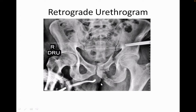The McAninch-Colapinto classification, the Goldman modification — which is the type that is commonly seen? Type 2 — partial — I think we are going to read that also.